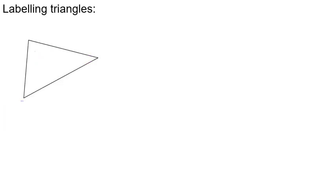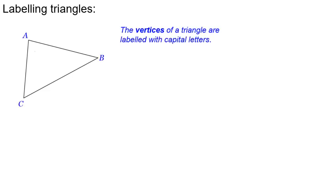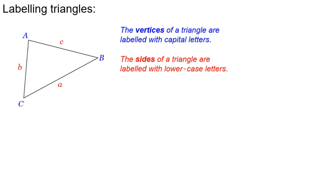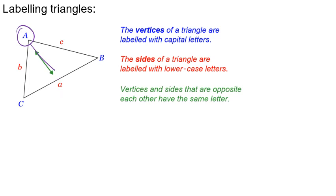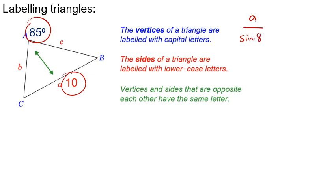First, we need to look at how to label triangles to use with the sine rule. The vertices are labeled with capital letters — normally A, B, and C. The sides are lowercase, and opposite each angle is the side with the same letter. For example, the angle at A is 85 degrees and the opposite side is 10 cm. If we calculate the length of the side divided by the sine of the angle — 10 divided by sine 85 — we get 10.04.